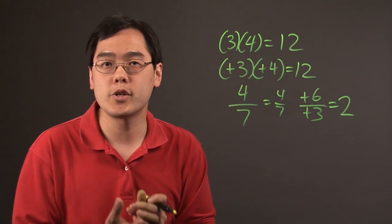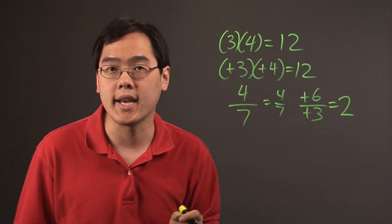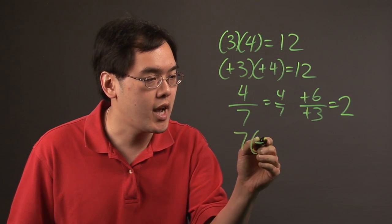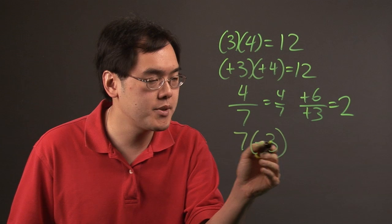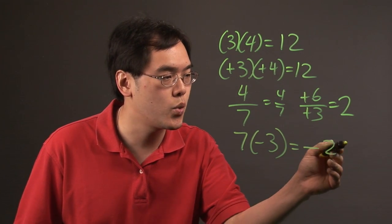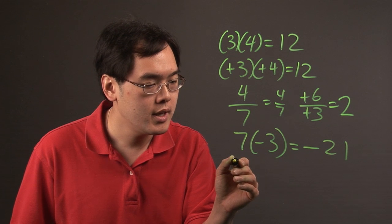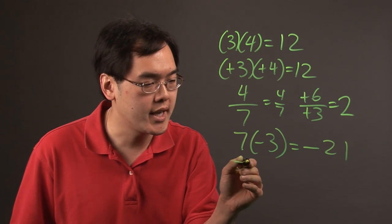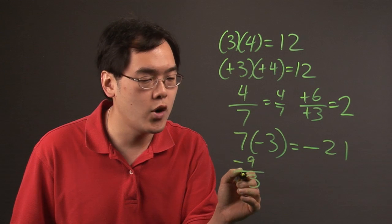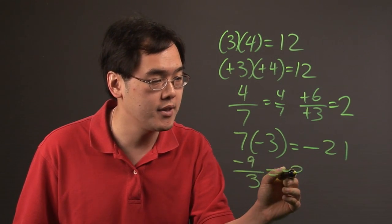When the two numbers multiplied or divided have different signs, the final result is always going to be negative. If you have 7 times negative 3, positive times a negative is going to be negative — 7 times 3 gives you 21, so the result is negative 21. And if you have negative 9 over positive 3, negative over positive is going to be negative, so that's negative 3.